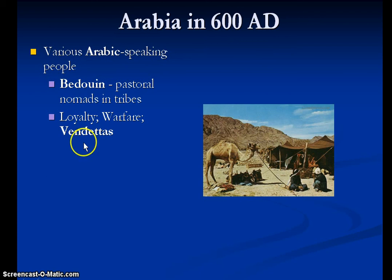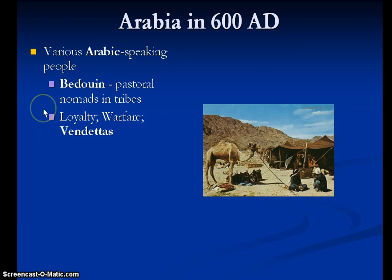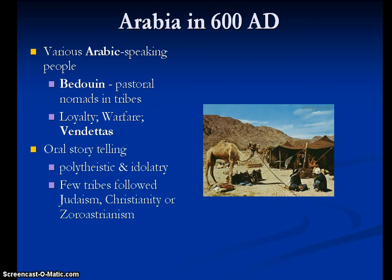They never had to completely adopt somebody else's ideas or culture or ideas on society and government. They were exposed to them, but they weren't necessarily forced into accepting them. As a result, you never see a large kingdom develop in the Arabian Peninsula up to this point. Most of these tribes fought with each other — based on family loyalty, extended family loyalty, warfare, and vendettas. This almost constant warfare between these tribes. We also see a tradition of oral storytelling, which you're also going to see reflected in what the Quran is, the holy text of Islam.